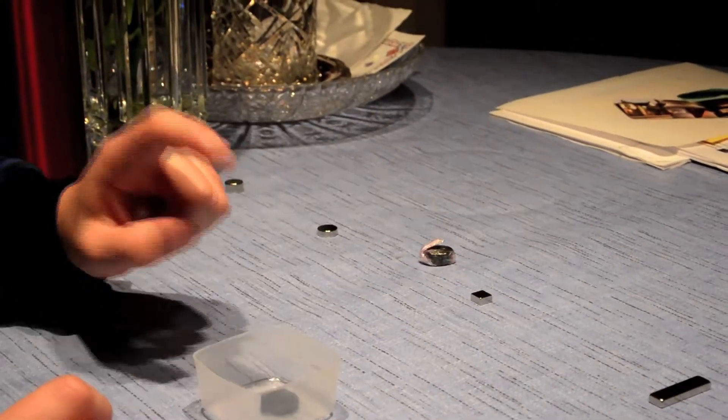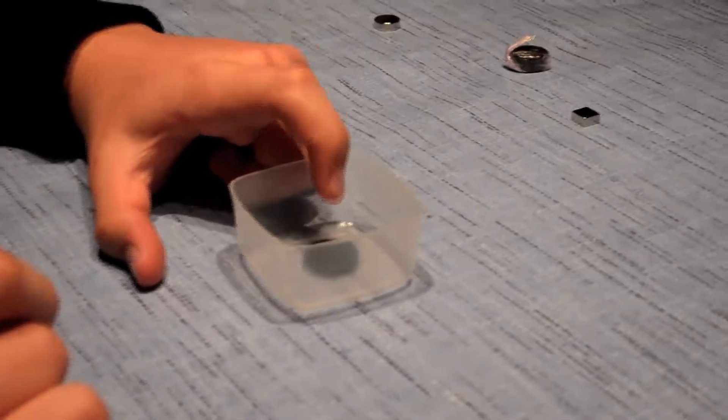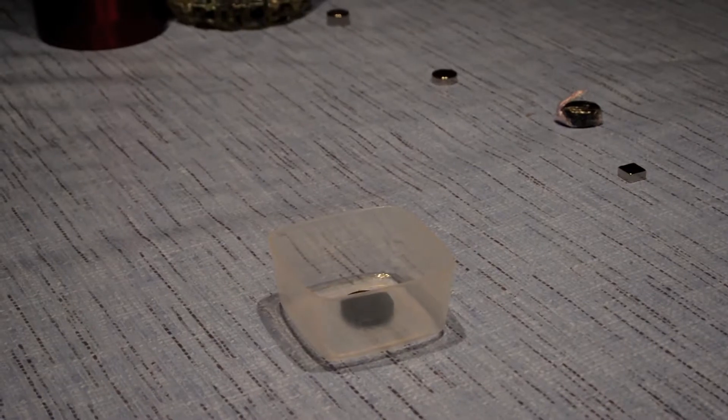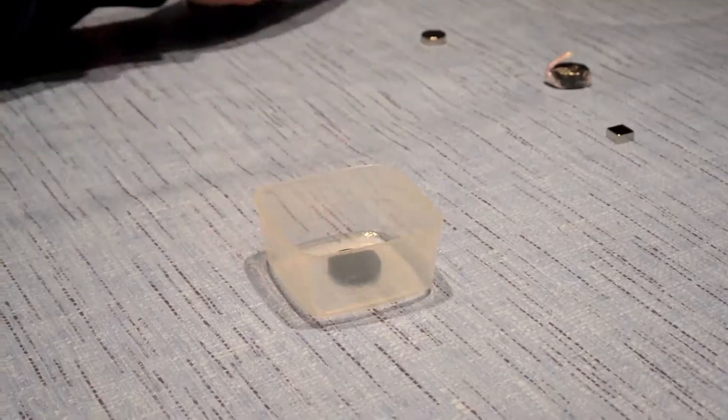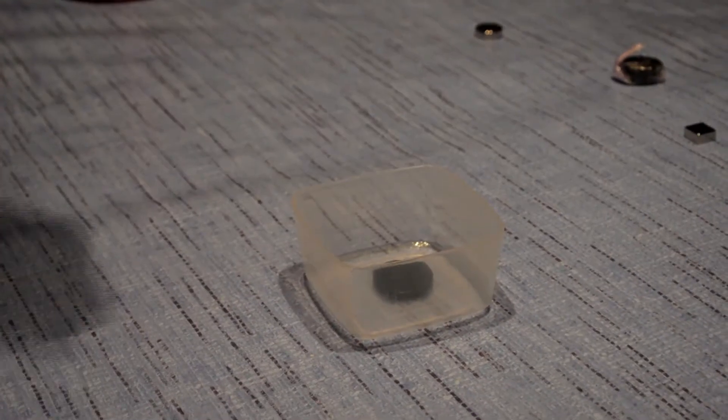First I will cool down this superconductor. Remember this one does not exhibit magnetic flux pinning which again I will show you later. I will cool it down and then place a magnet over it. These are neodymium iron boron magnets and they are quite powerful.